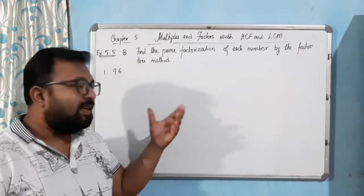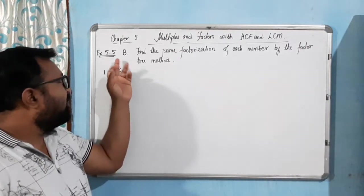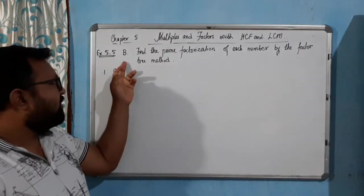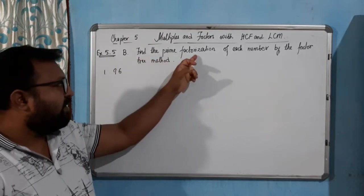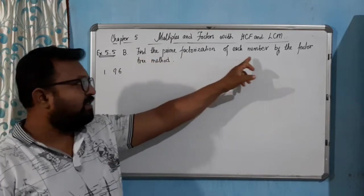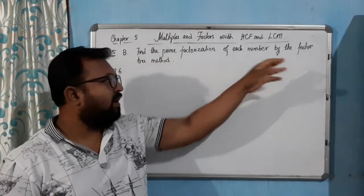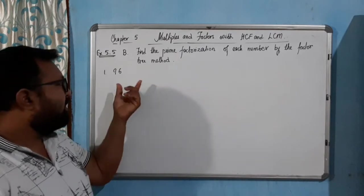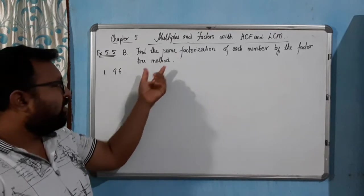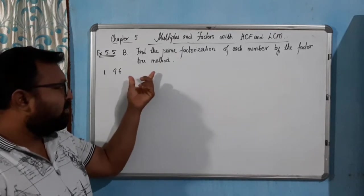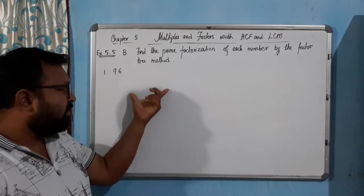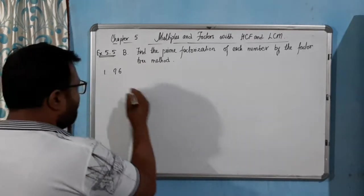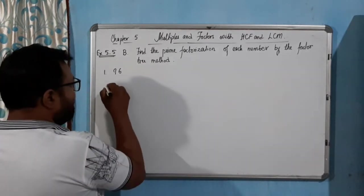Hello students, now we come to the next question of Exercise 5.5. This question says: find the prime factorization of each number by the factor tree method. That means you will try to find all the prime factors, but we will draw this like a tree. See here how I do this — the solution.